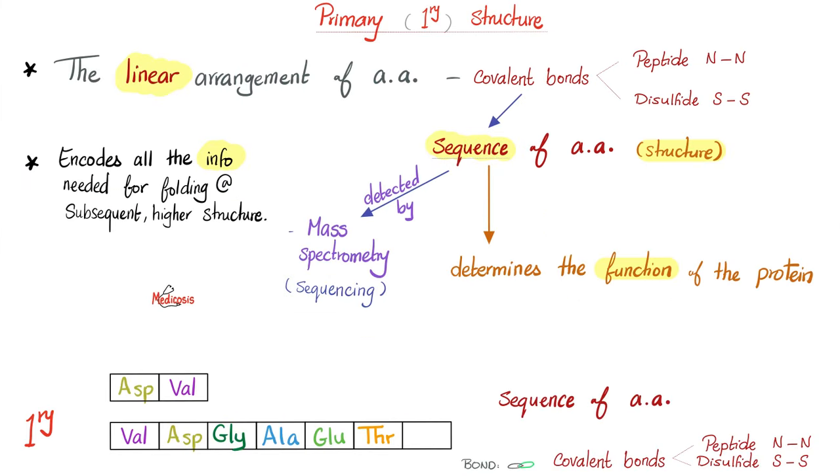Let's dig even deeper. Primary structure. What's that? Linear arrangement of the amino acid. The sequence matters. The order matters. Since this is all the info, this encodes for all the info that you need for folding at subsequent higher structures. I.e. you need this sequence for the next, secondary, tertiary, and quaternary structures that will come later.